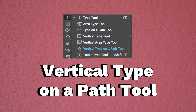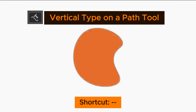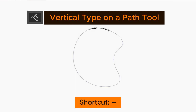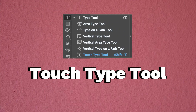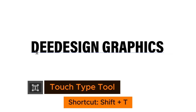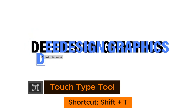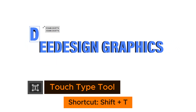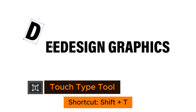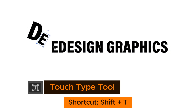The Vertical Type on a Path Tool has no default shortcut — click on a path to create vertical text that follows the path. The Touch Type Tool shortcut is Shift+T. It works similarly to the Selection Tool but with touch type — click on individual characters in a text to bring up the bounding box, then you can scale, move, and rotate it.